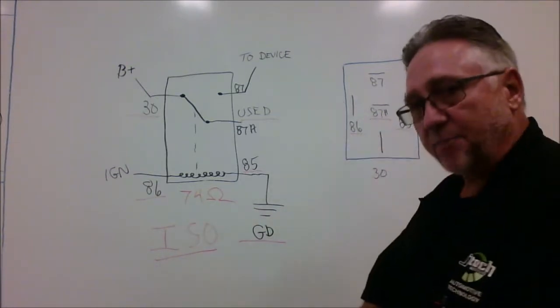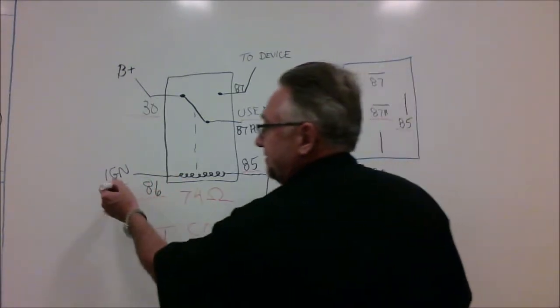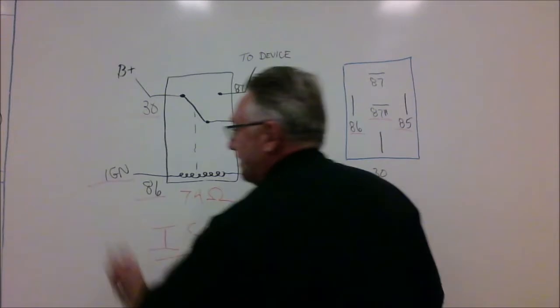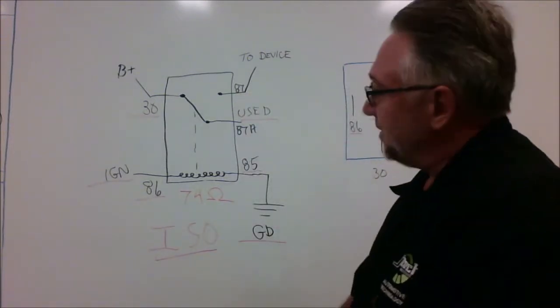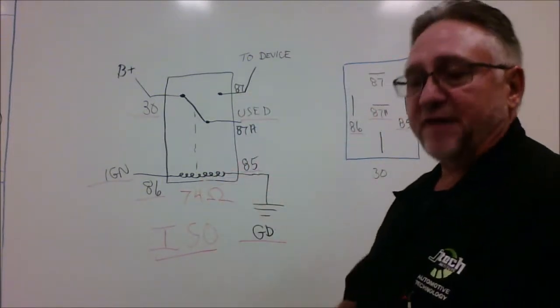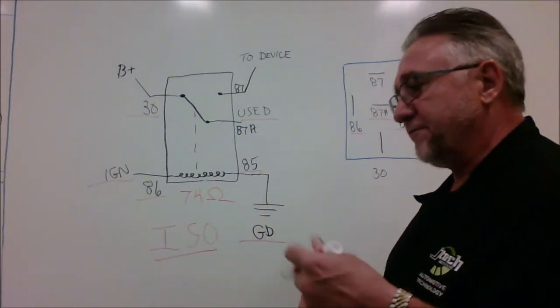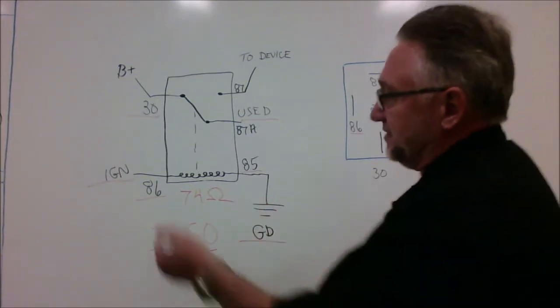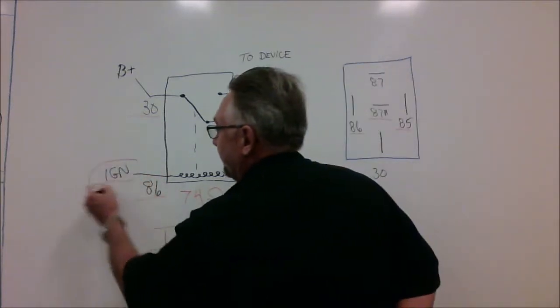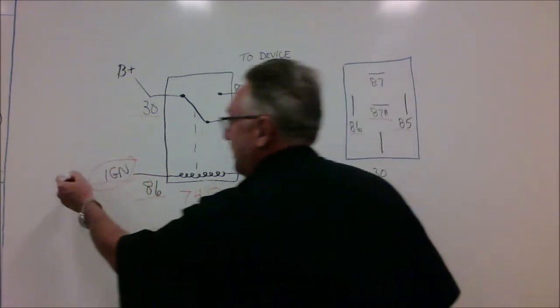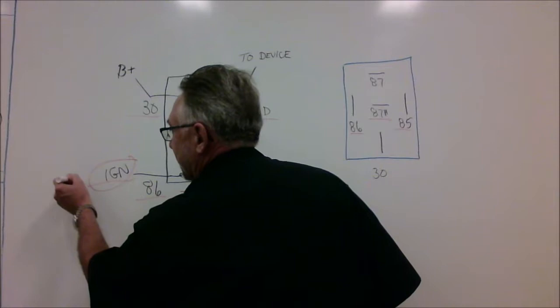Okay, you'll note that 86 is actually tied to the ignition. And that could be anything. That could be a coil, it could be your fuel pump, it could be anything. But this comes directly from the ignition, and of course it will have a fuse of some sort in line with this particular line.